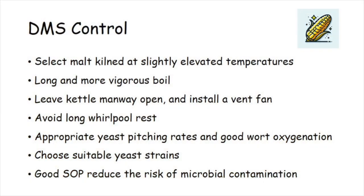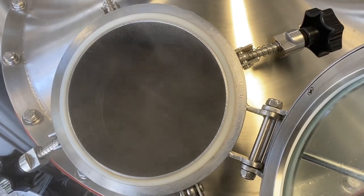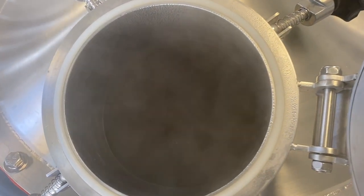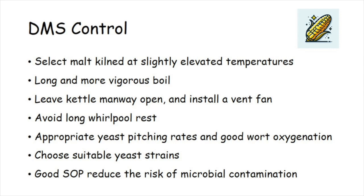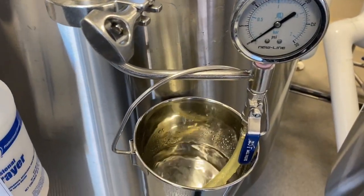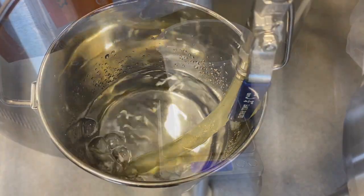A long wort stand should also be avoided. The wort temperature remains relatively high during a wort stand, which allows any remaining SMM to convert into DMS after the opportunity for volatilization during the vigorous boil has passed. Appropriate yeast pitching rates and good wort oxygenation prior to fermentation can also help reduce the levels of DMS by ensuring yeast health and vigorous fermentation, which can drive off volatile DMS as CO2 escapes the fermentation vessel.